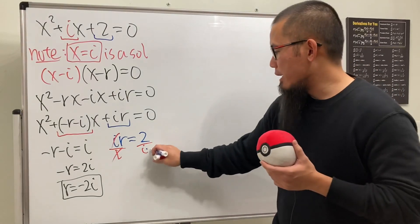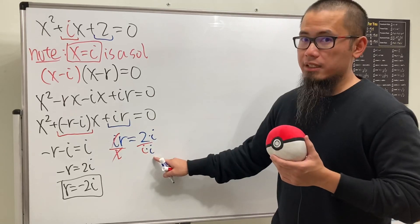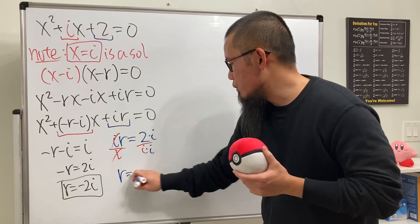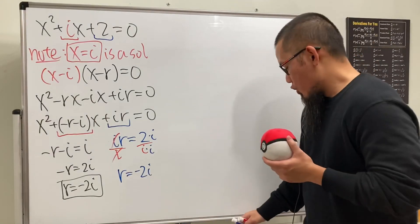Right here, let's multiply i on bottom and on the top. i times i is negative 1. And then of course we can put a negative right here. So r equals negative 2i. Same answer. So i and negative 2i are the solutions, which is pretty cool.